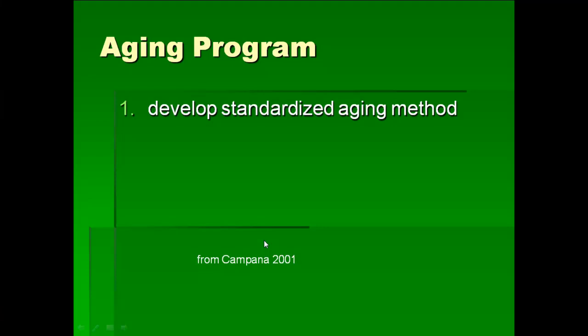The aging program I want to talk about now — if you're in a lab and you're working with fish all the time, you want to have an aging protocol that ensures the most precision and accuracy. This is from Campana 2001. The first step is to develop a standardized aging method: develop your technique and make very clear all the different ways you're going to prepare and look at the structure under the microscope. Once you have your standardized aging method, you need to do age validation to verify the technique actually works.